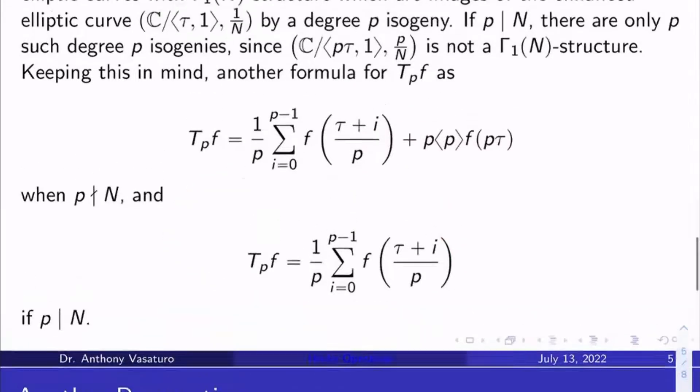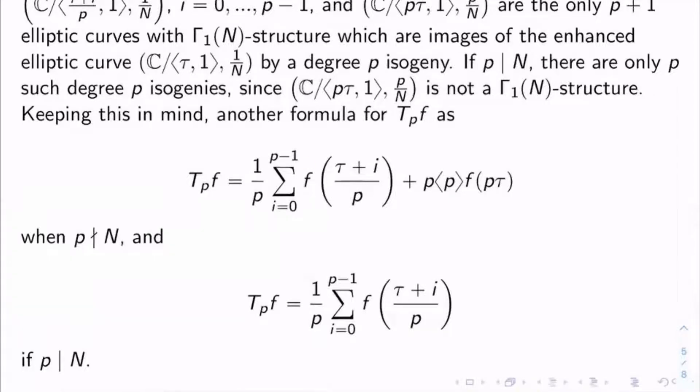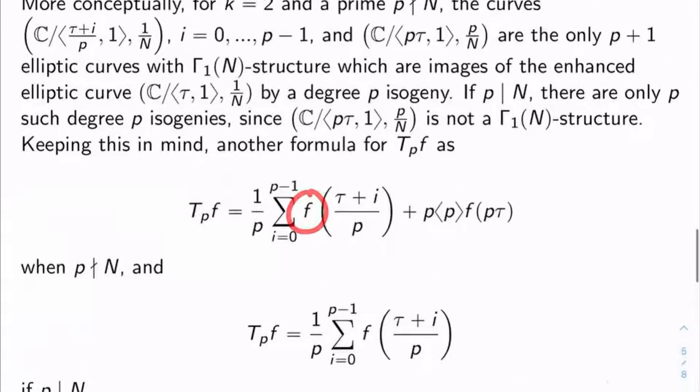So what you're doing here is you're taking f and you're evaluating it at each one of these generators. That's what's going on. See p tau here, here's p tau. You're taking f, you're evaluating it at all the non-trivial generators of all the lattices which admit an elliptic curve, which is the image under your given generic elliptic curve for gamma sub 1 of n under a degree p isogeny. You're adding them all up, taking the average, and you're good to go.